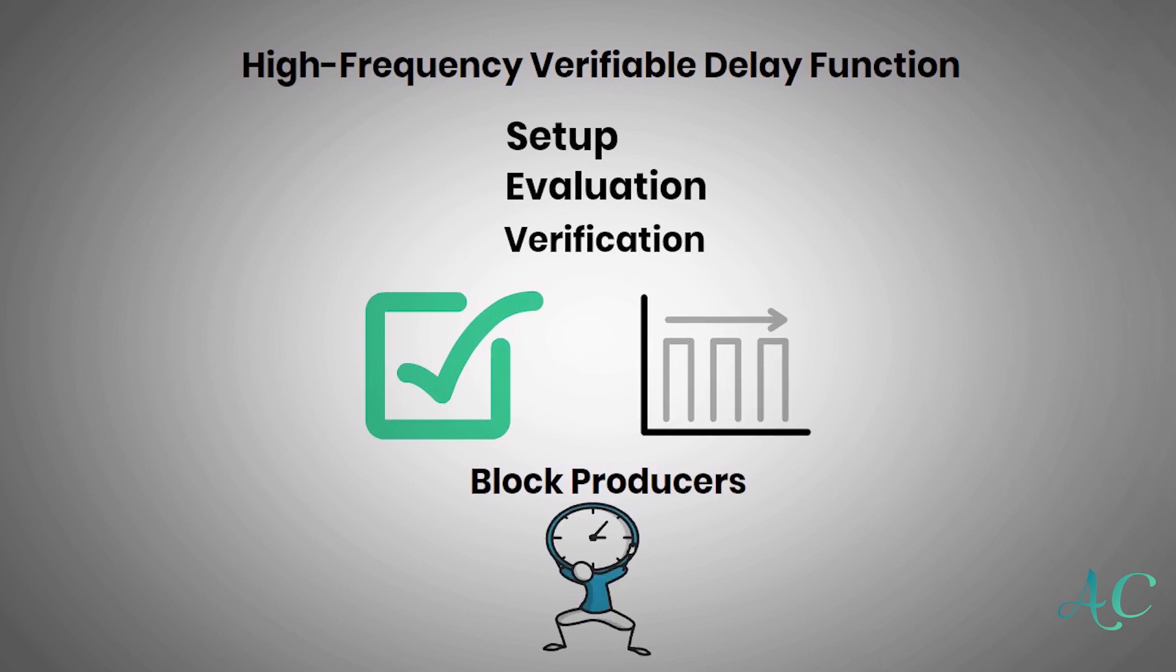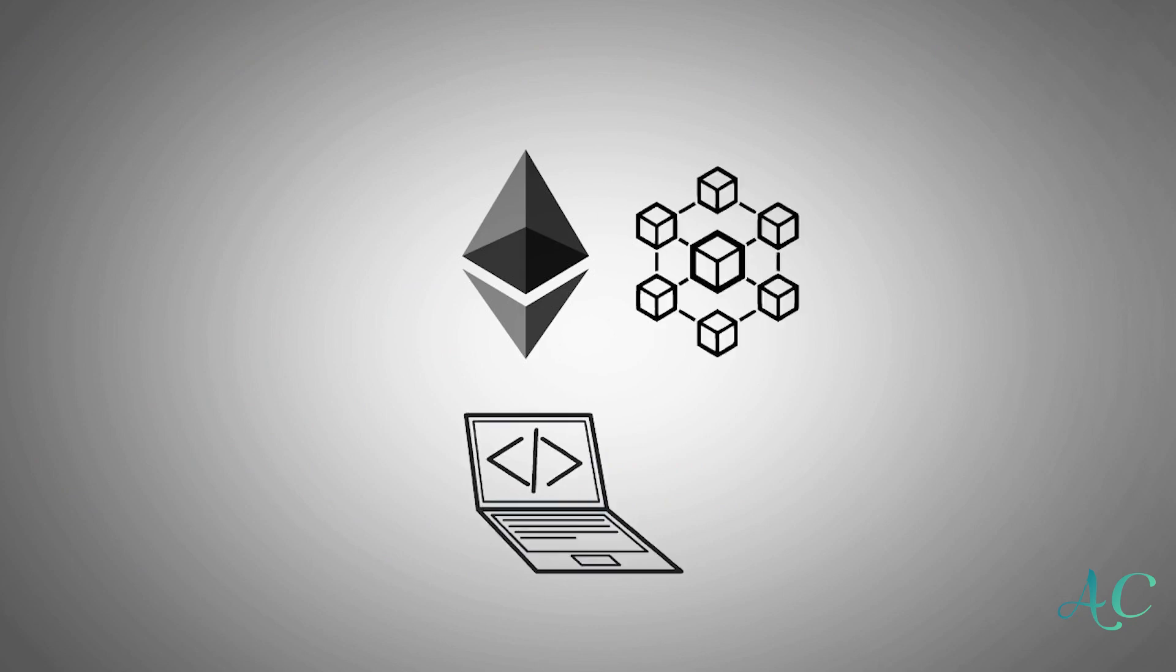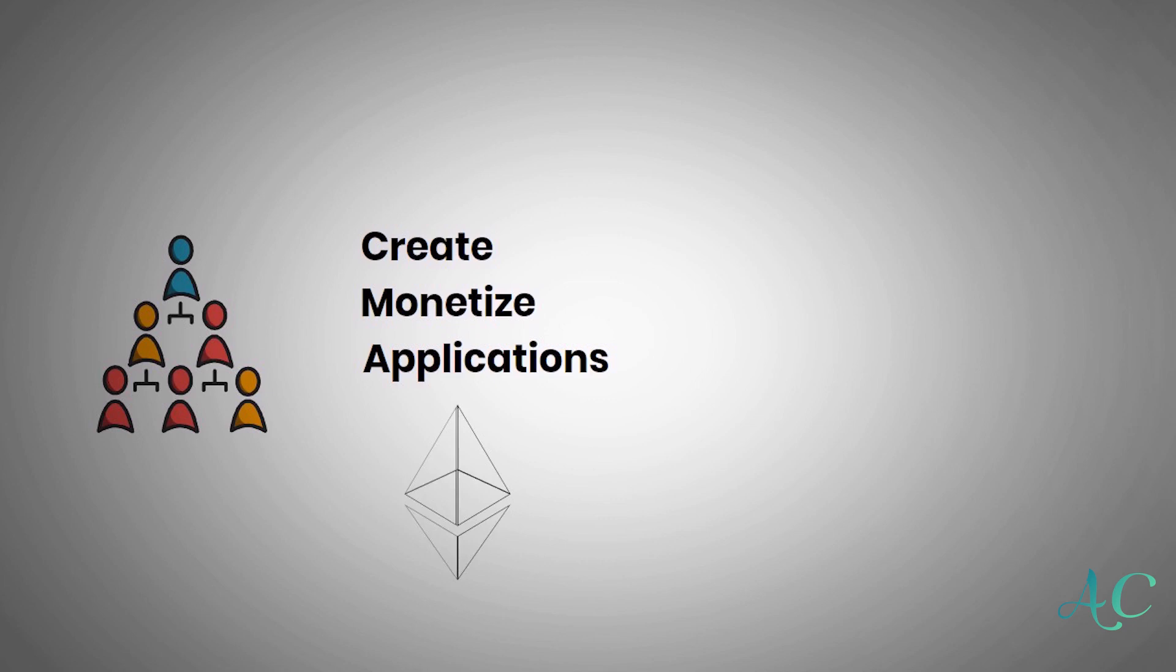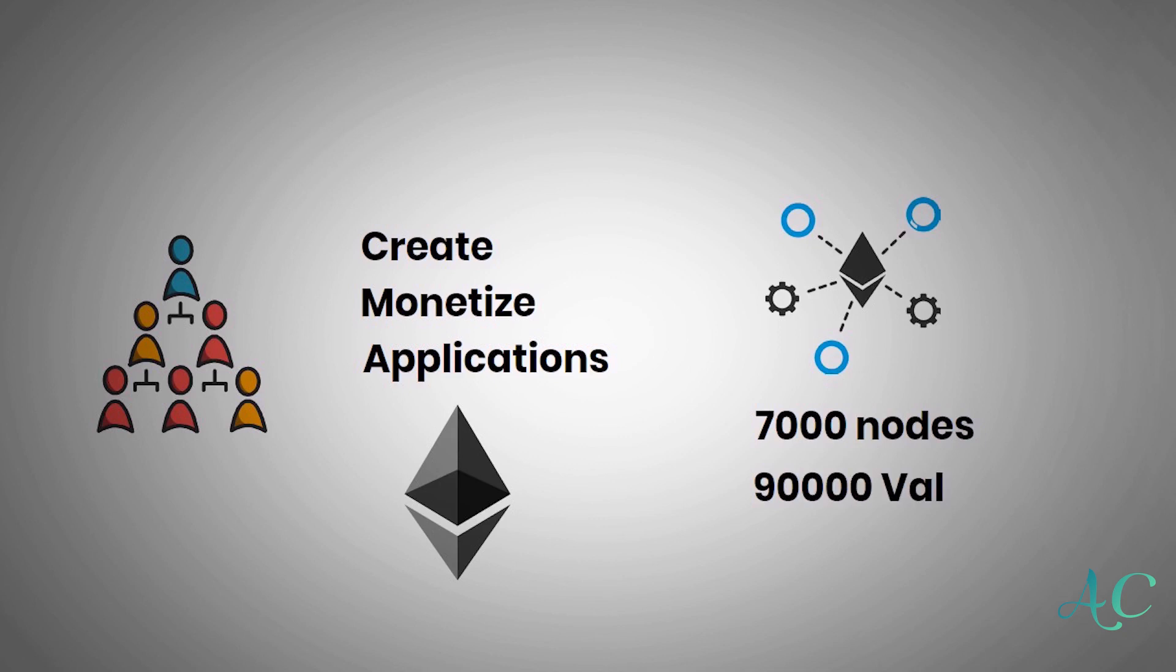On the other hand, Ethereum is a blockchain platform with its cryptocurrency and programming language called Solidity. The network users can create, monetize, and use applications on the platform using Ethereum currency as payment. The Ethereum network has 7,000 nodes and 90,000 validators with a market capitalization of $350 billion and a transaction speed of 13 to 45 transactions per second.